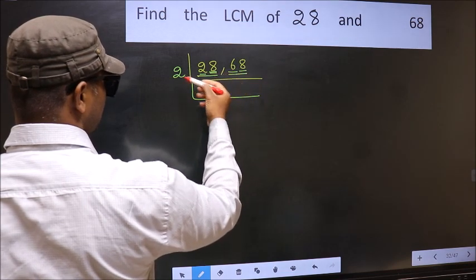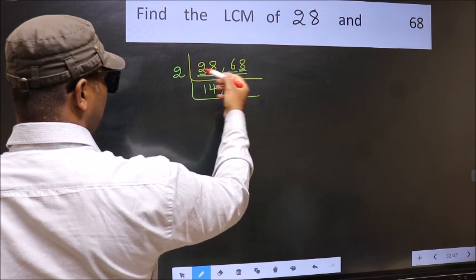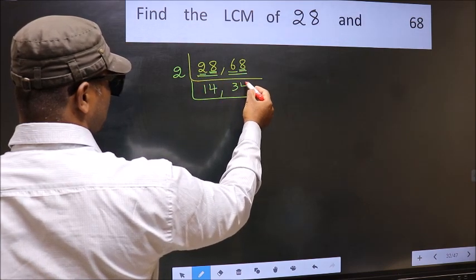First number 6, when do we get 6 in 2 table? 2 times 3 is 6. The other number 8, when do we get 8 in 2 table? 2 times 4 is 8.